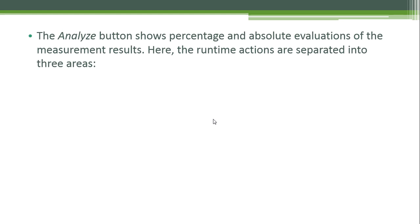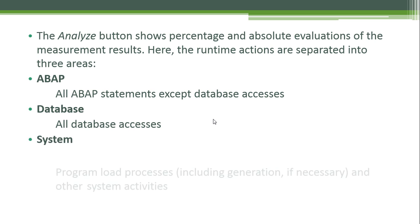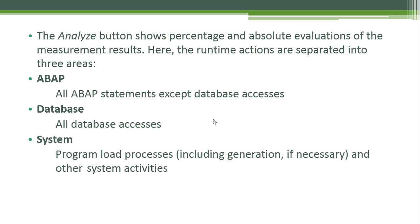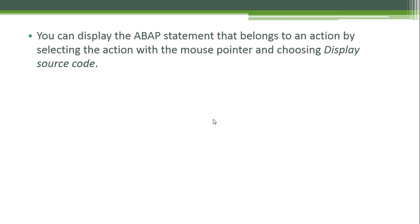The Analyze button shows percentage and absolute evaluations of the measurement results. The runtime actions are separated into three areas: ABAP — all ABAP statements except database accesses are evaluated; Database — all database accesses are evaluated; and System — program load processes including generation if necessary and other system activities. Using the appropriate push buttons, you can call up the detailed display you require. You can display the ABAP statement that belongs to an action by selecting the action and choosing Display Source Code.